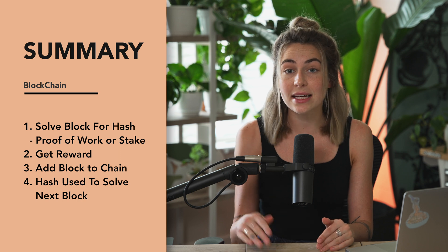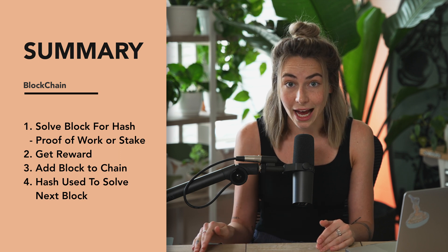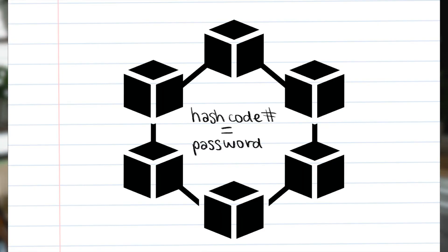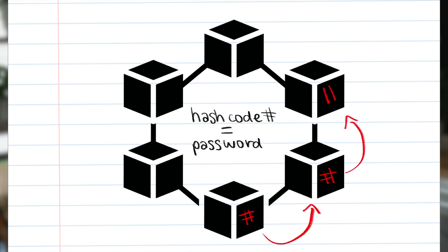An important thing to notice: the next block's hash, or password, is calculated using the hash from the previous block. This is where the entire magic of the chain comes in, because if you want to change one block, it affects all the other blocks beforehand. The result is a ledger of data — in Bitcoin's case, a record of transactions — that cannot be changed and that are encrypted in time.